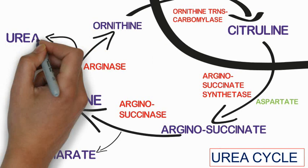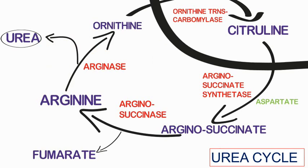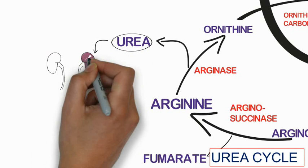Urea is a soluble compound that is transported through the kidney via blood and is excreted from the body by the kidney in the form of urine.